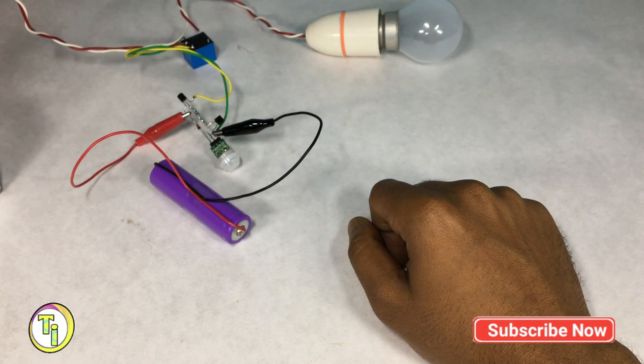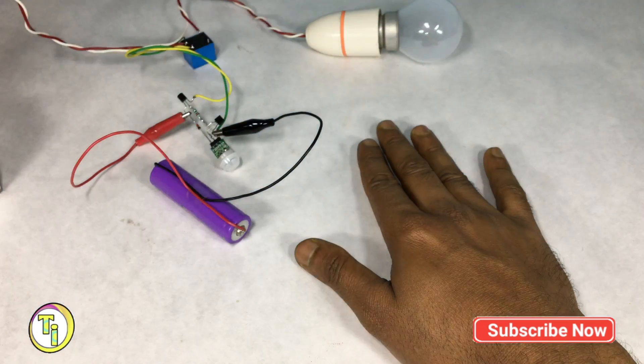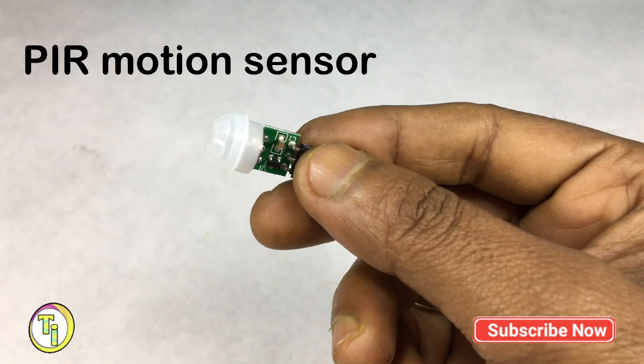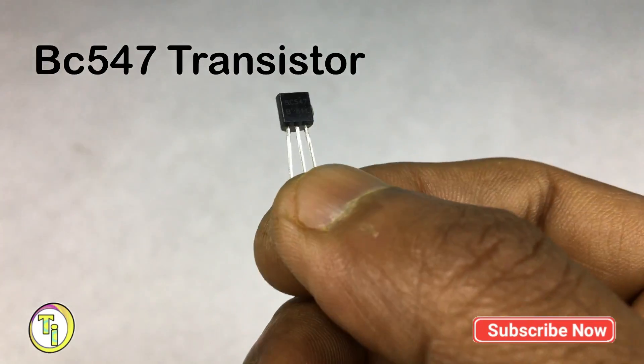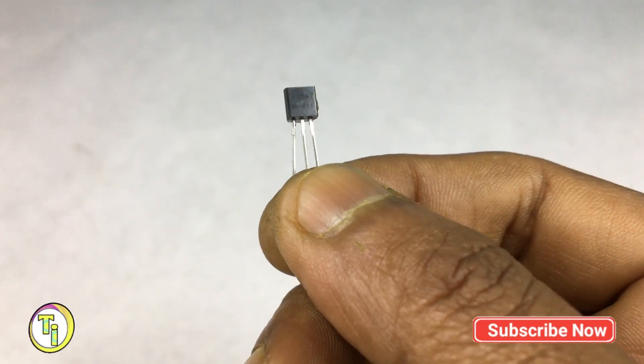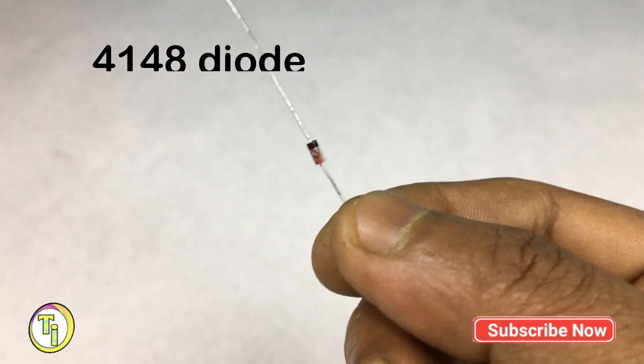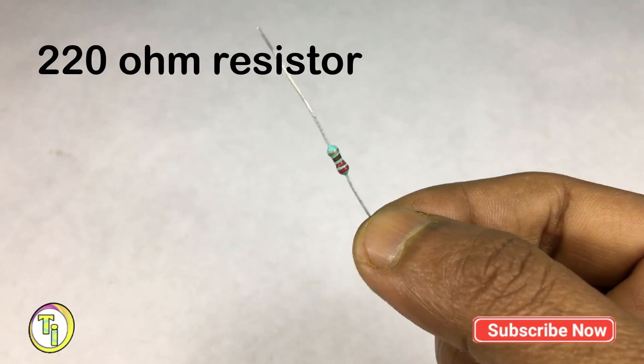The components required for this project are: one PIR motion sensor module, this is 3.3 volt version, BC547 transistor, one 4148 Zener diode, one 220 ohm resistor.